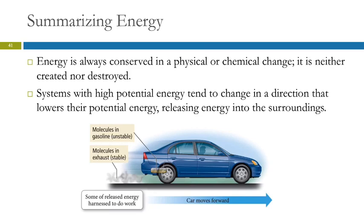So here's an example of a car. The car has gasoline, which is high in chemical potential energy. It's unstable. We burn it in a controlled way in the internal combustion engine, and we take that chemical potential energy and we translate that into kinetic energy of the car moving forward.